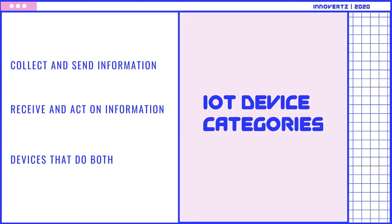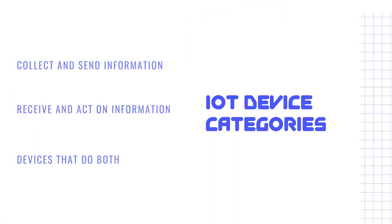IoT devices can be categorized into the following three types: devices which collect and send information, devices that receive and act on information, and devices that can do both operations.